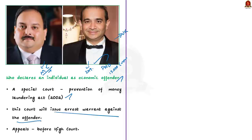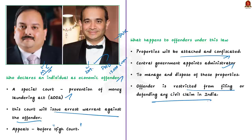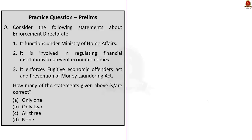Appeals against the orders of this special court can be made before the high court. Under the Fugitive Economic Offenders Act, the properties of the fugitive economic offender will be attached and confiscated. The central government will appoint an administrator to manage and dispose of these properties. In addition, the offender is restricted from filing or defending any civil claim in India. This is all we need to know about the Fugitive Economic Offenders Act 2018.